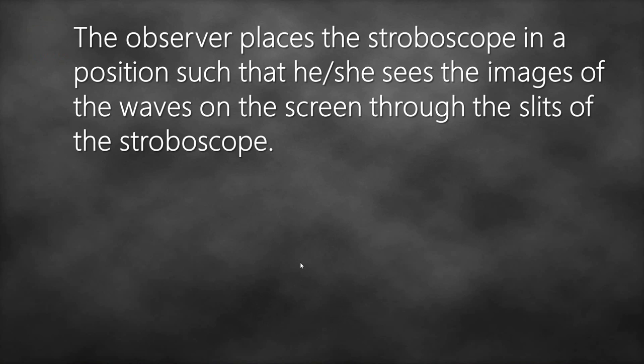The observer places the stroboscope in a position such that he or she sees the images of the waves on the screen through the slits of the stroboscope.